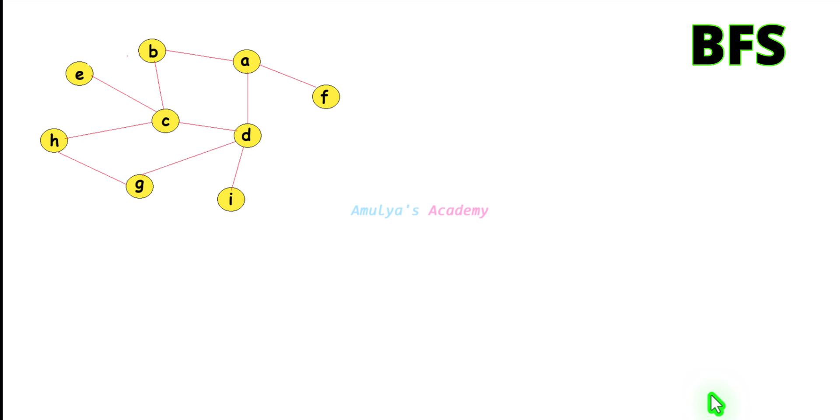Hello and welcome to Amulyas Academy YouTube channel. We were discussing BFS, and in the BFS algorithm you can start a traversal operation by choosing a starting node, then visit that starting node, and in the next step you need to visit all the unvisited adjacent nodes of that node.